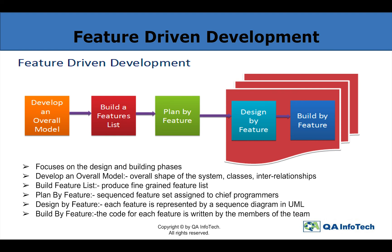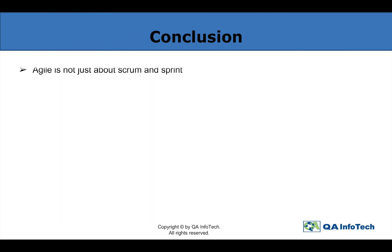Unlike some other Agile methods, FDD claims to be suitable for the development of critical systems. FDD was first reported in Coad et al. 2000, and was further developed on the basis of work done for a large software development project by Jeff Luca, Peter Coad, and Stephan Palmer.